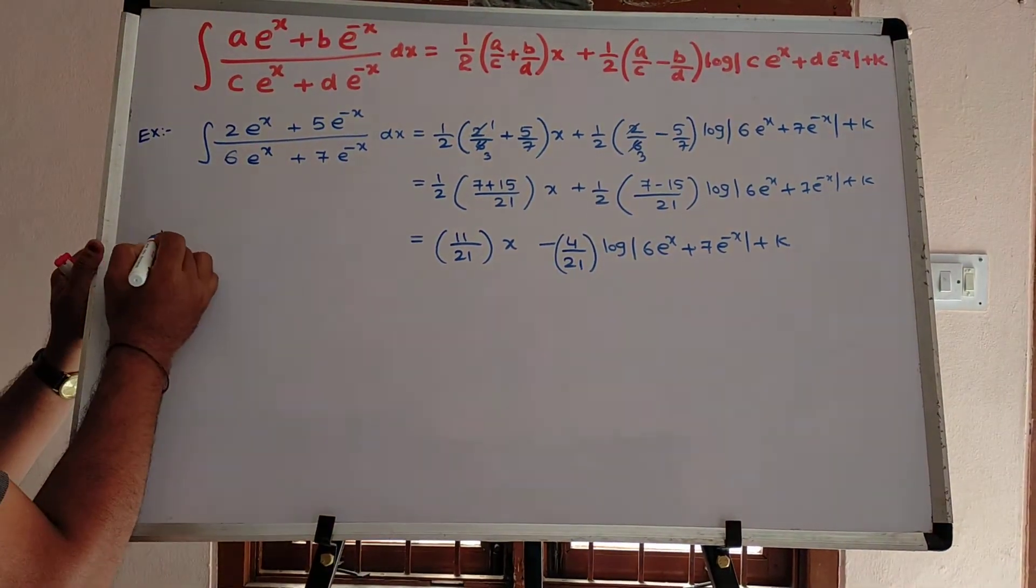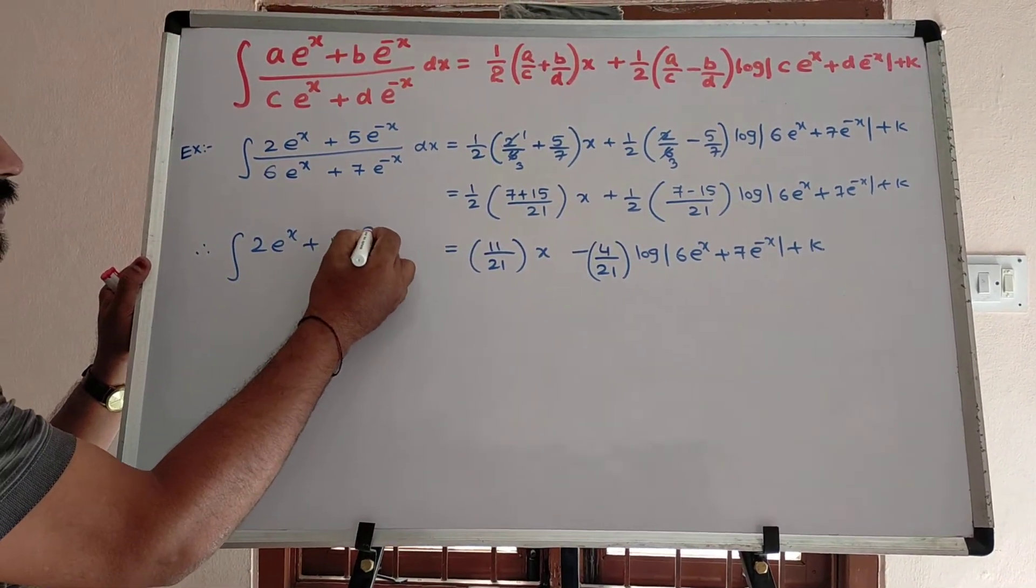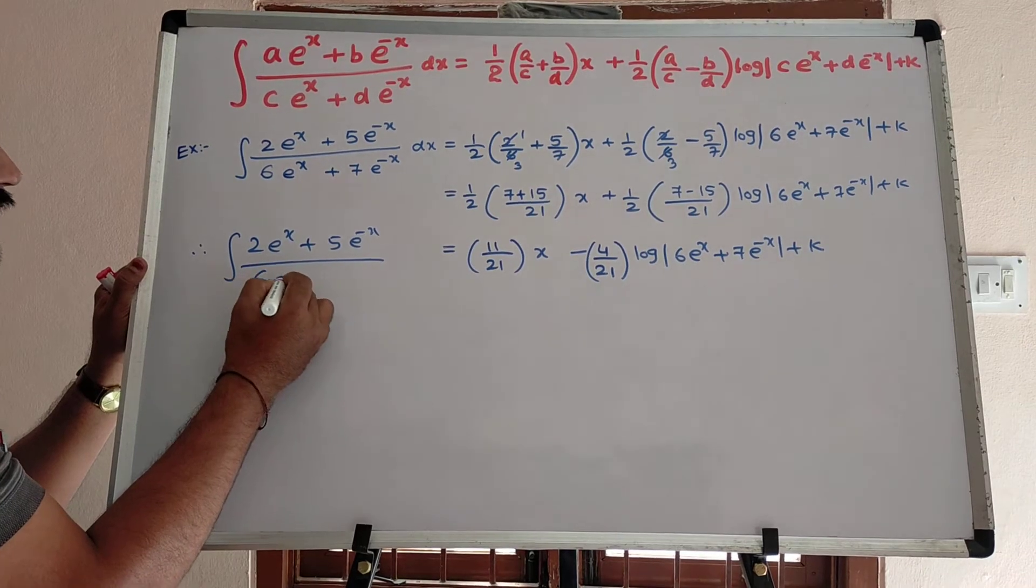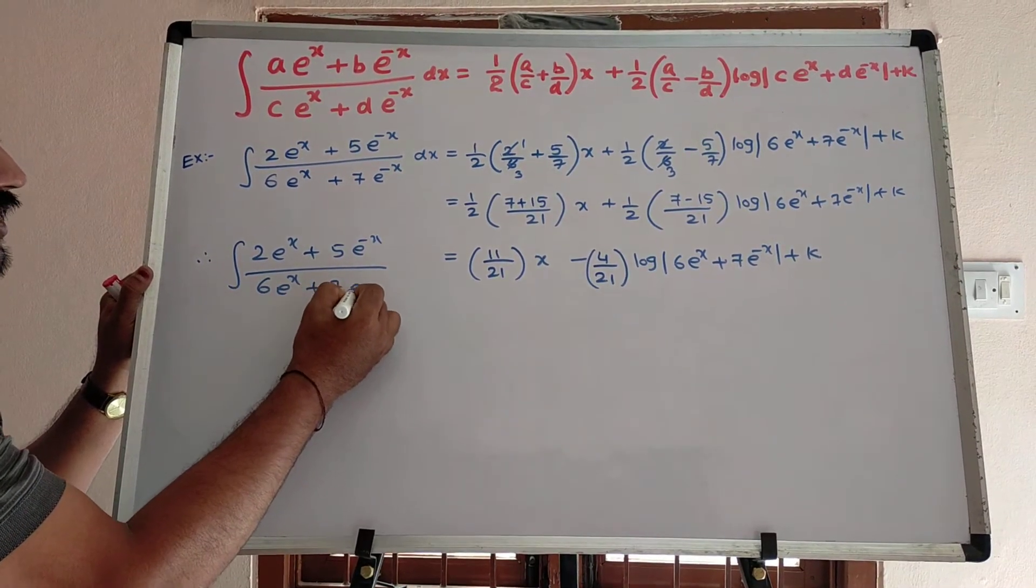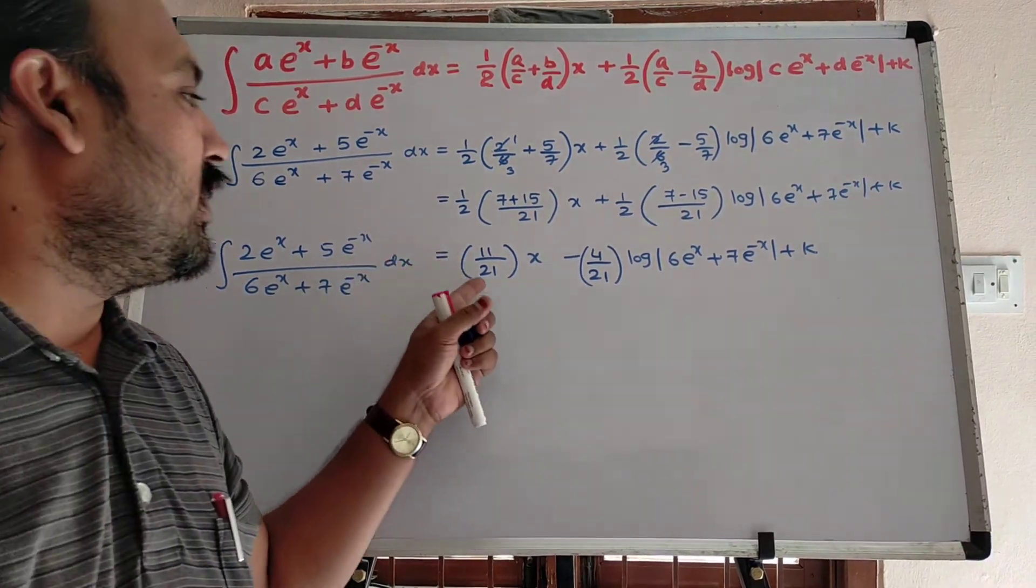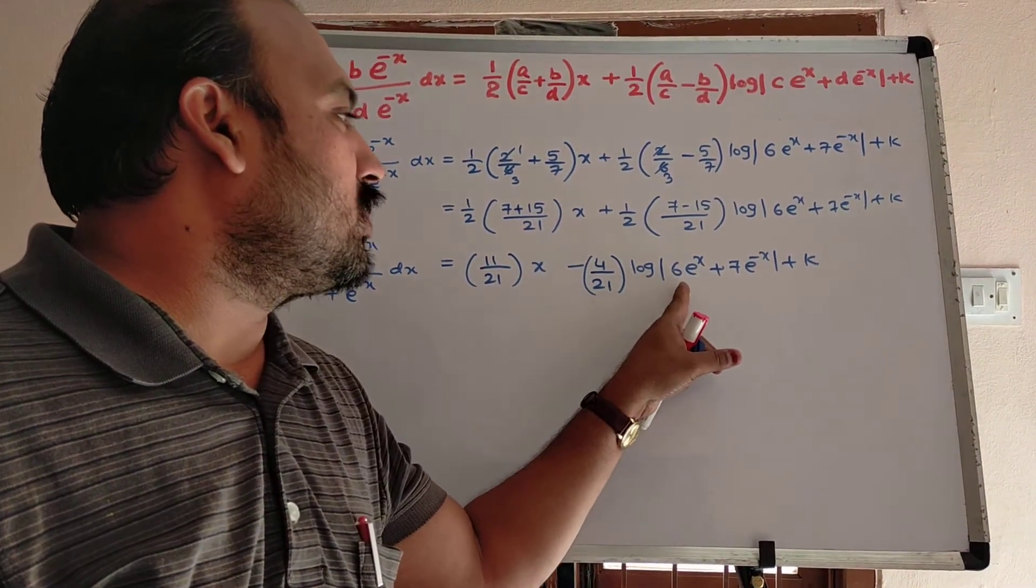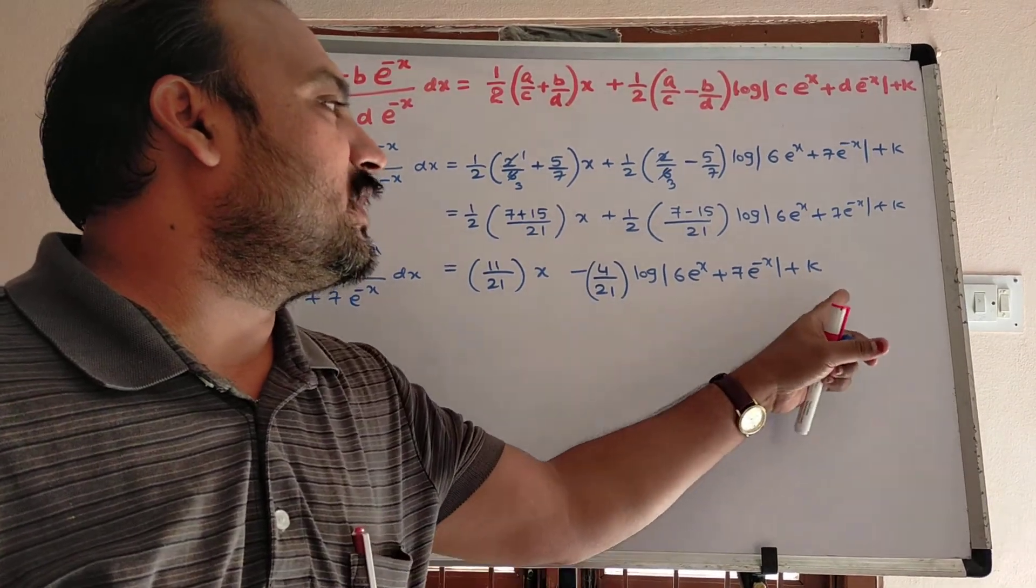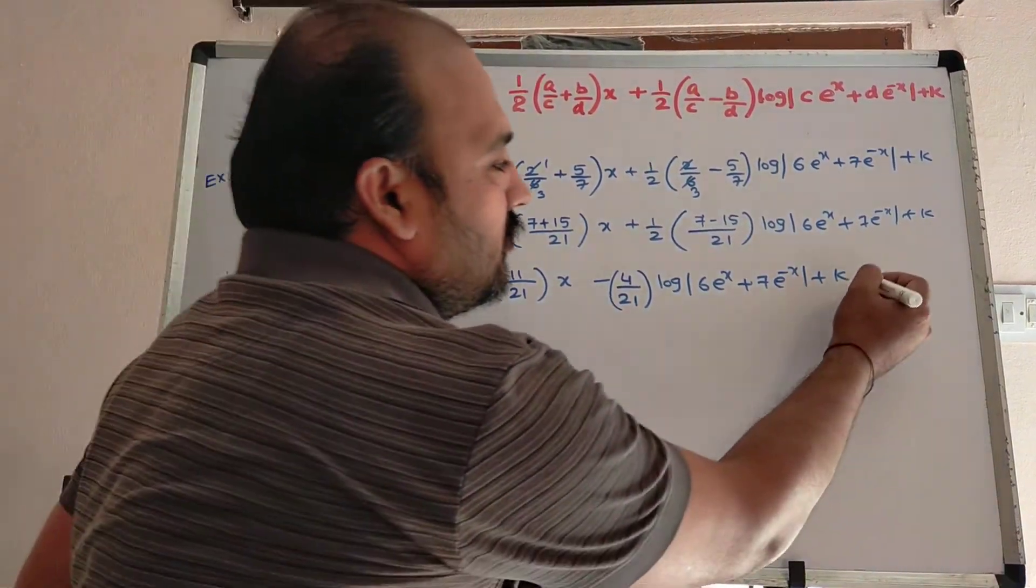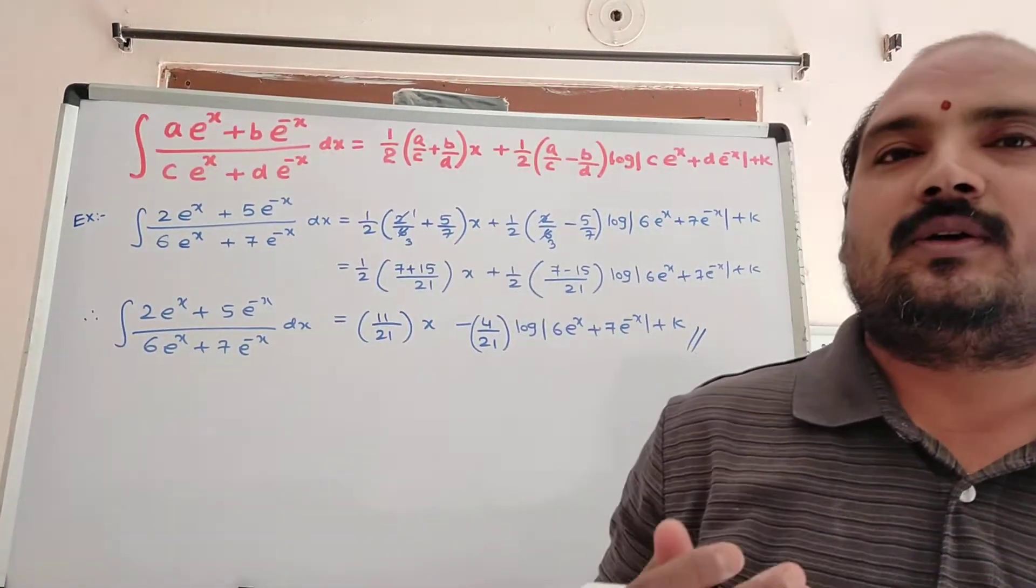Therefore, integral 2 e power x plus 5 e power minus x divided by 6 e power x plus 7 e power minus x into dx is equal to 11 by 21 x minus 4 by 21 log mod 6 e power x plus 7 e power minus x plus k.